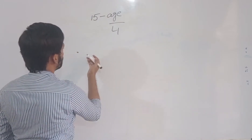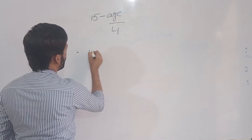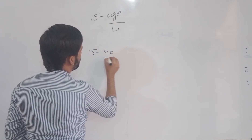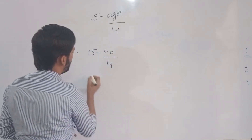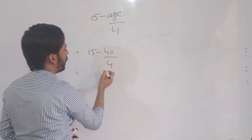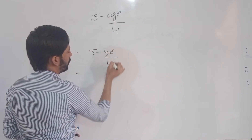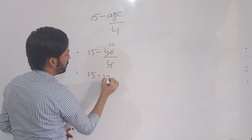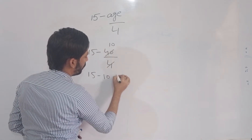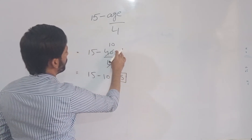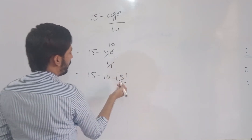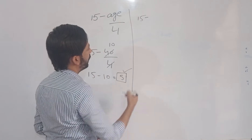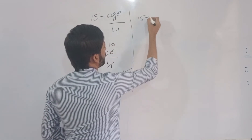Let's solve some examples. Suppose the age is 40 years. We apply the formula: 15 minus 40 over 4. First, 40 divided by 4 equals 10. Then 15 minus 10 equals 5. So at 40 years of age, the amplitude of accommodation is 5 diopters.